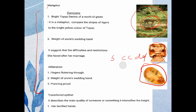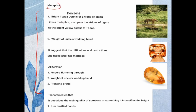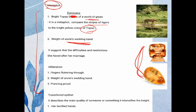Now poetic devices. First, metaphor: 'bright topaz denizens of a world of green' — the tiger is compared to bright topaz, which is a yellow color, representing the tiger's striped skin. 'The massive weight of uncle's wedding band' is also a metaphor — a wedding band is not actually that heavy, but it metaphorically suggests the difficulties, restrictions, and burden Aunt Jennifer faced after marriage.